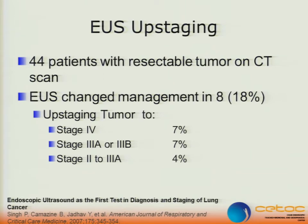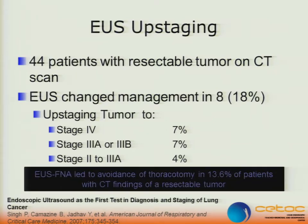EUS upstaging: this is a small study looking at patients with resectable tumor on CT. EUS was able to change the management in eight of these patients, upstaging to stage 4, 3A, 3B, and 2 to 3A, based on lymph nodes and metastasis that were biopsied. They claimed that EUS led to avoidance of futile thoracotomy in about 14% of patients with CT findings of a resectable tumor. Again, this is an old study — PET was not used in all of these patients.